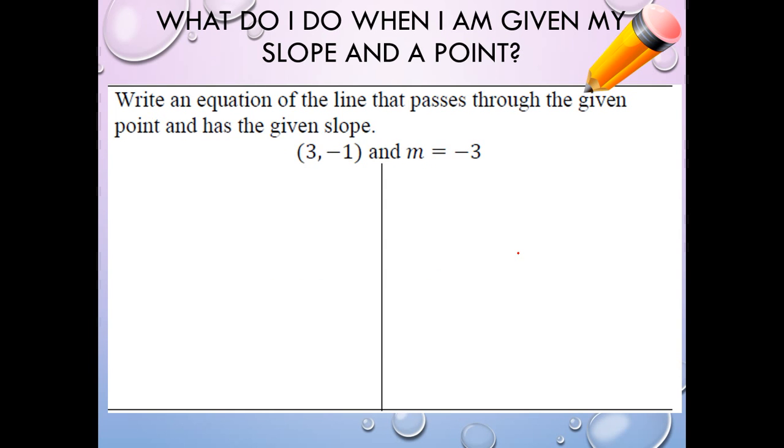On the right-hand side now, we are going to solve it using our new steps. I'm going to use point-slope form: y minus y1 equals mx minus x1. My m, or my slope, is negative 3. So I'm going to plug in for my m that negative 3 that they gave me. Now, they gave me a point (3, -1). This is my x and this is my y.